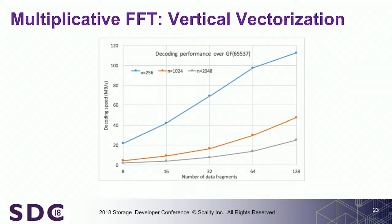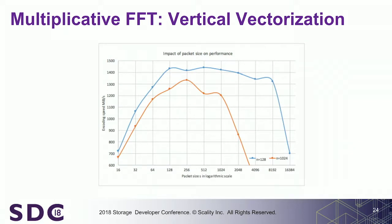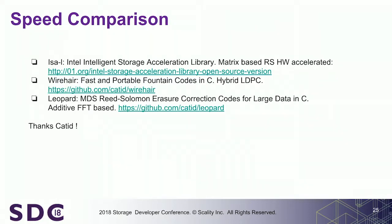The problem is — and I'll show this in the decentralized application — you cannot really apply systematic codes there. This is the effect of the vectorization: we have a sweet spot in terms of packet sizes when we vectorize.